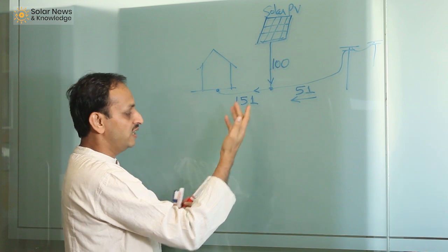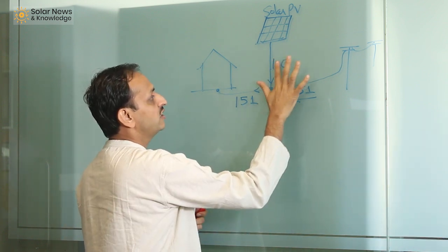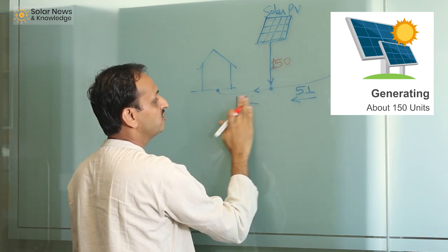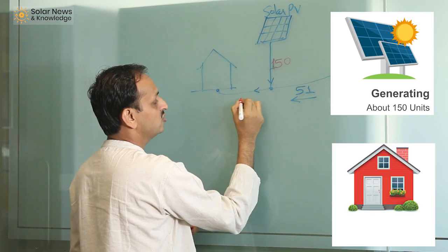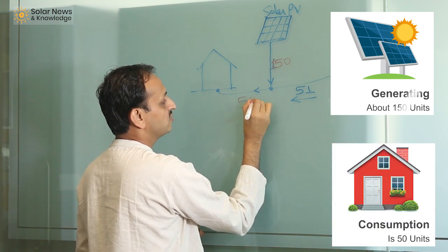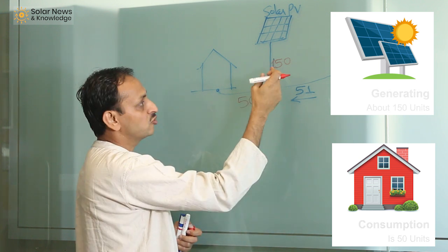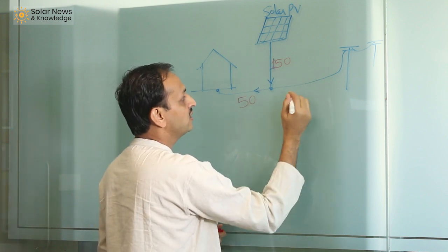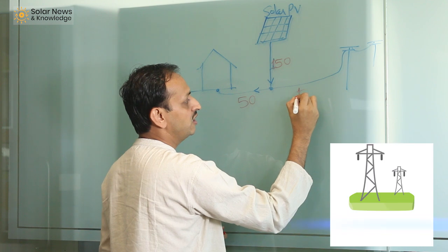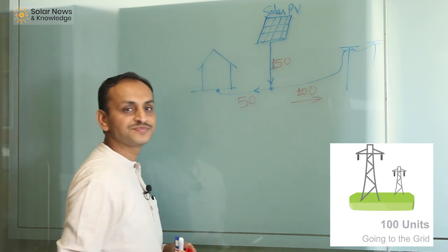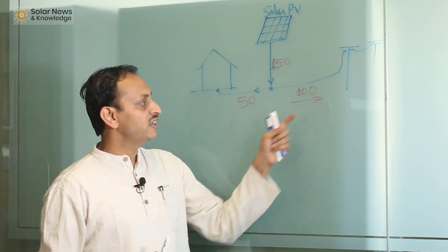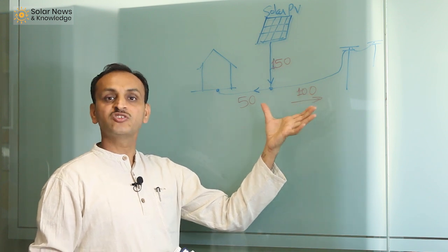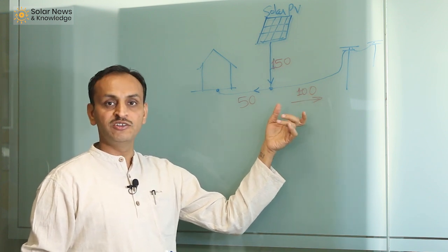Now take another example where solar is generating 150 units but your consumption is only 50 units. The net is 100 units — 150 is coming from solar, you are only consuming 50. The remaining 100 units are going to the grid. In the net metering system, you can actually bank or store those 100 units and use them at some other time.